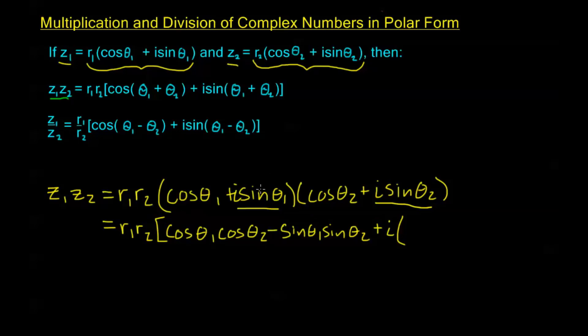And I'm going to add to this all of the terms created by foiling that have an i. So the first term with an i is sine θ₁ cosine θ₂, plus my second term with an i is cosine θ₁ sine θ₂. And we have our bracket here.